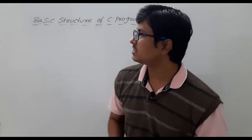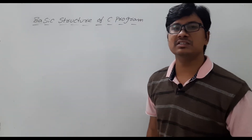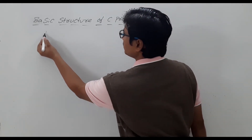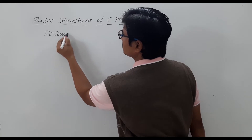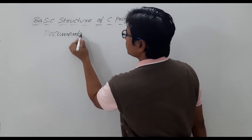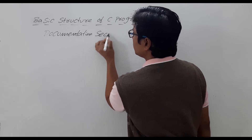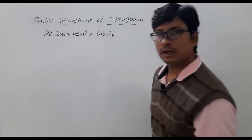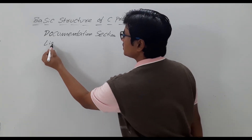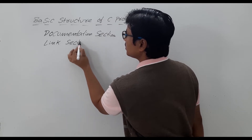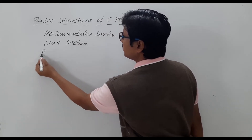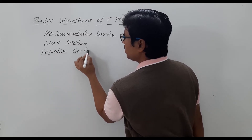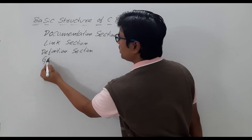First let me write the various sections in a C program, then I will discuss each section in detail. The first section is the documentation section. Then we will have the link section, then the definition section, then the global declaration section.